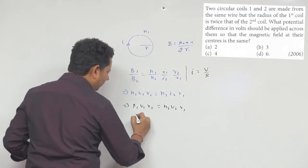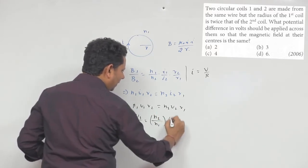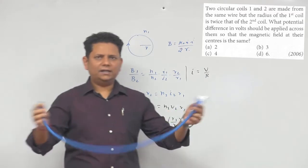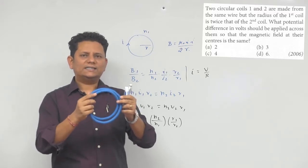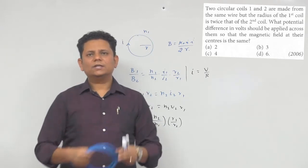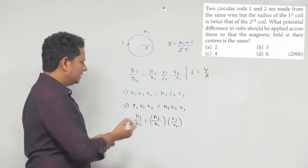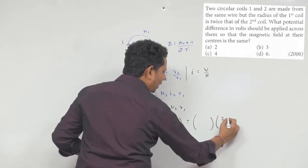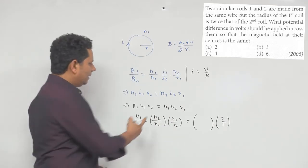इस basis पर V1/V2 = (N2/N1) × (R1/R2)। Same wire use किये हैं — जिस coil का radius कम है उसके number of turns बढ़ जाएंगे। Radius of first coil is twice that of second, यानि R1 = 2R2, तो R1/R2 = 2. और second coil के turns N2 = 2·N1, तो N2/N1 = 2।